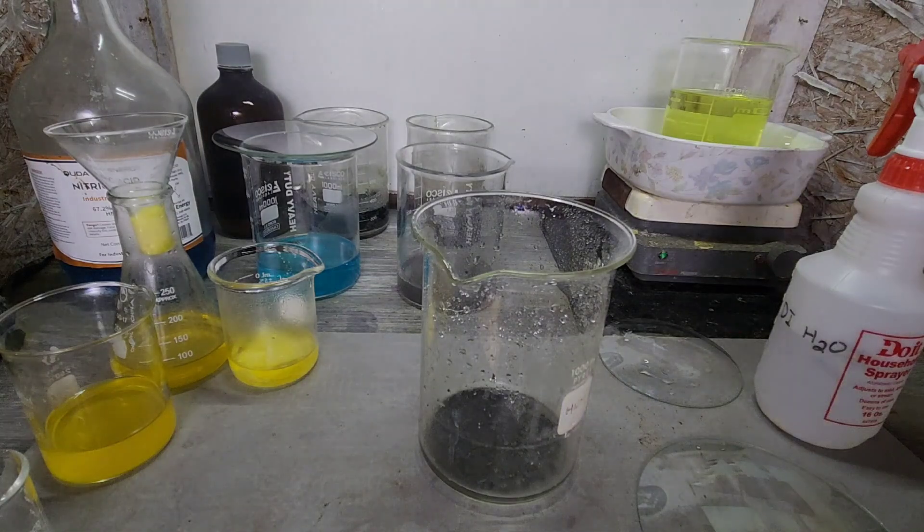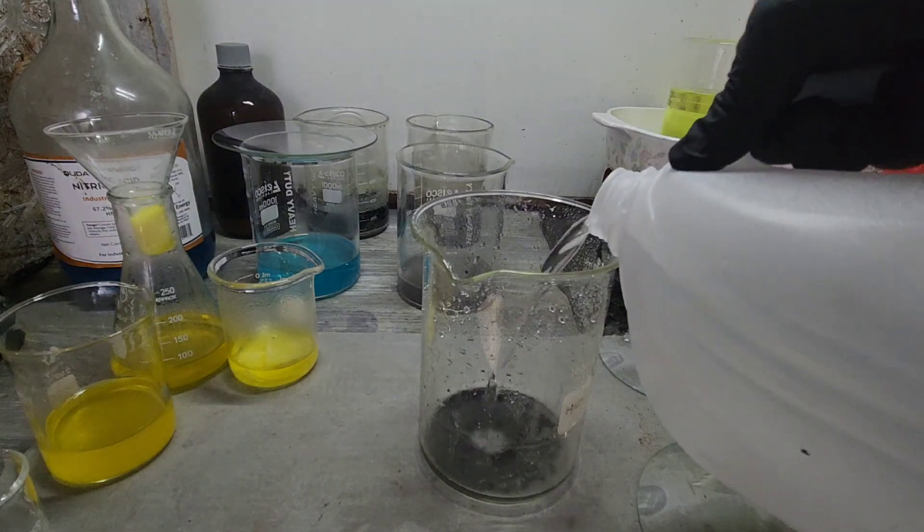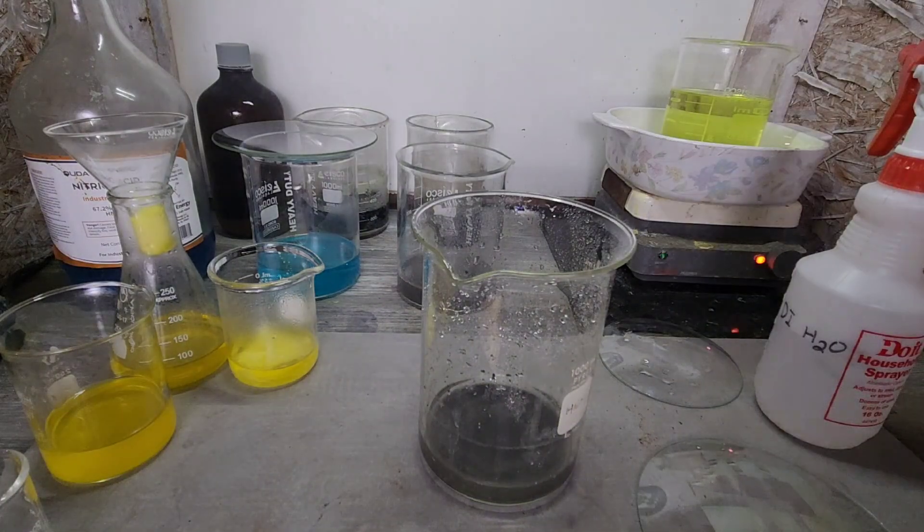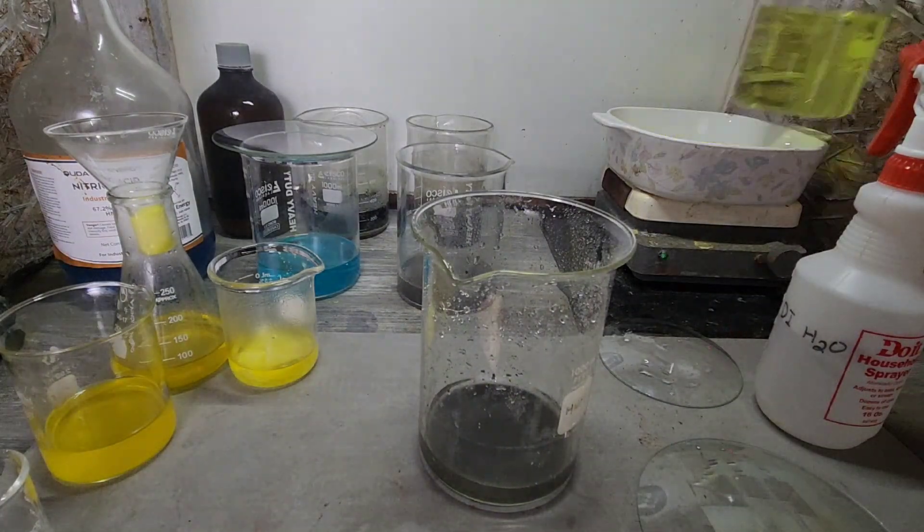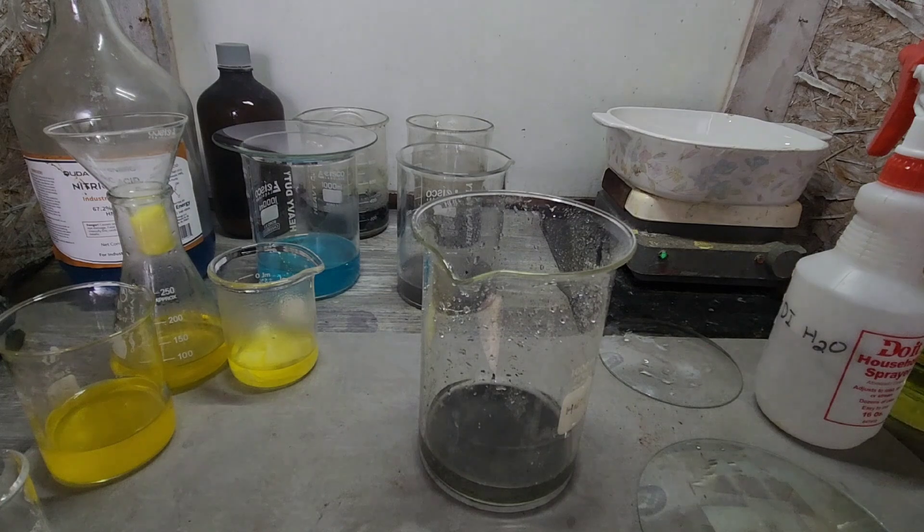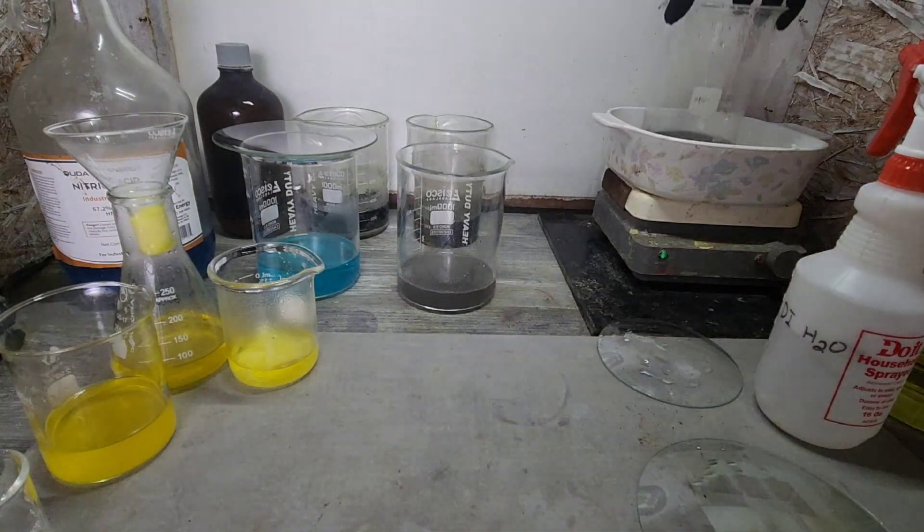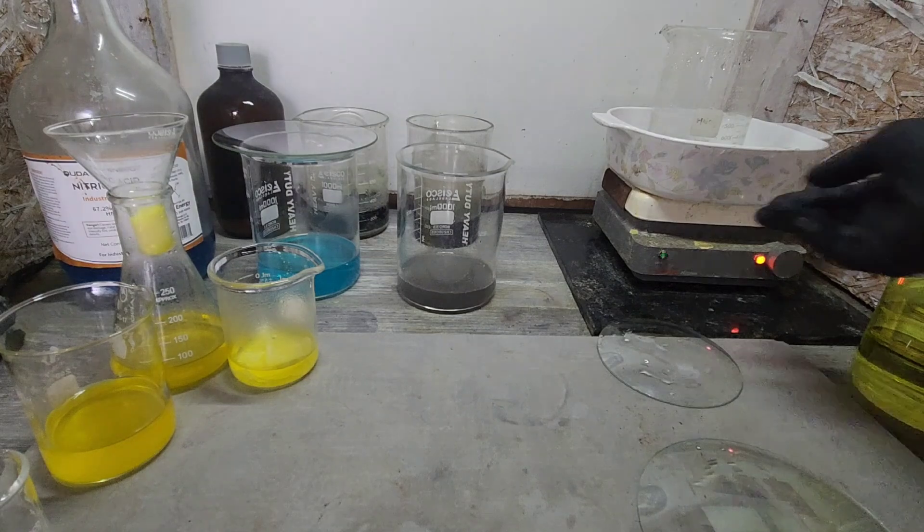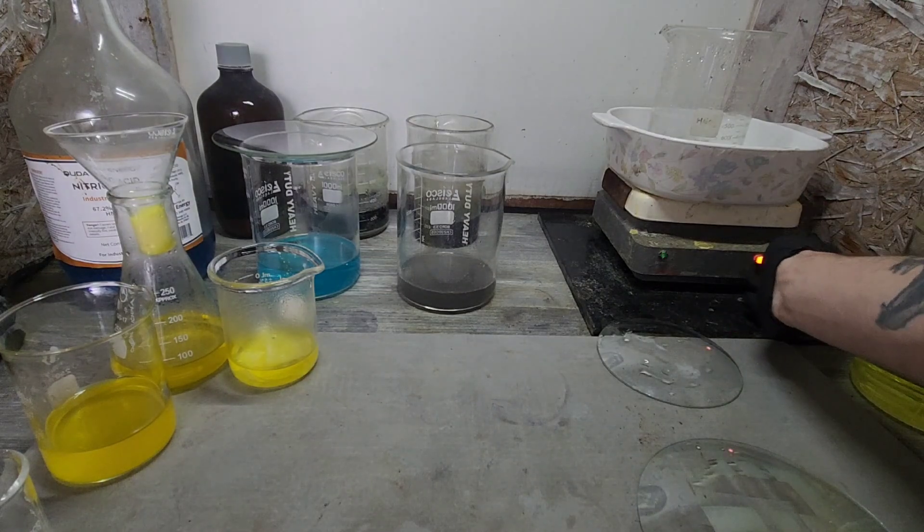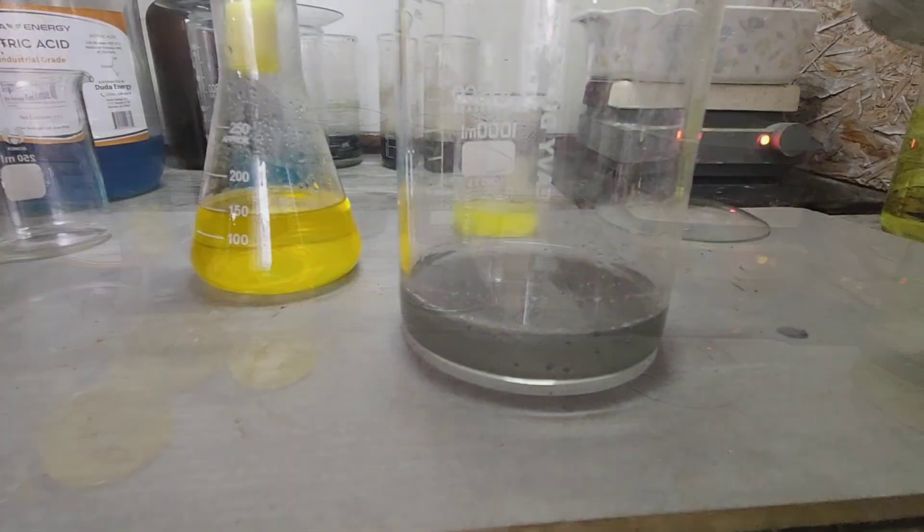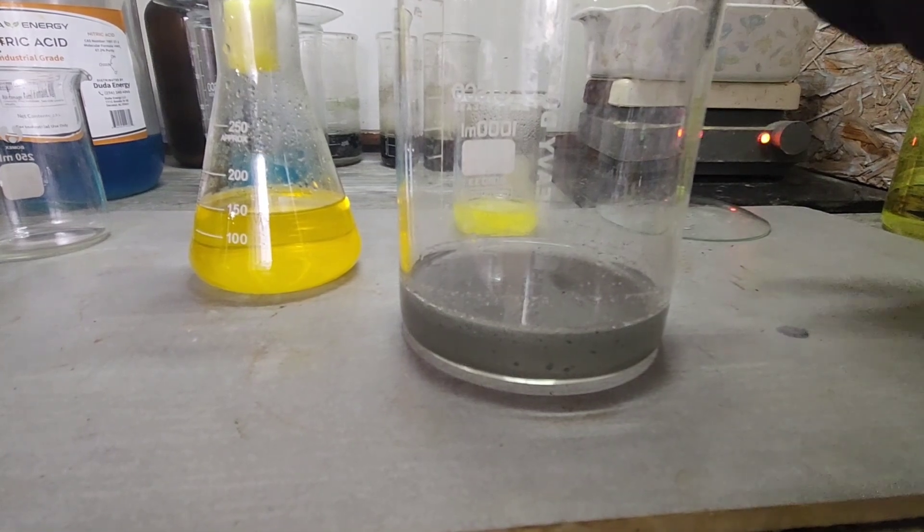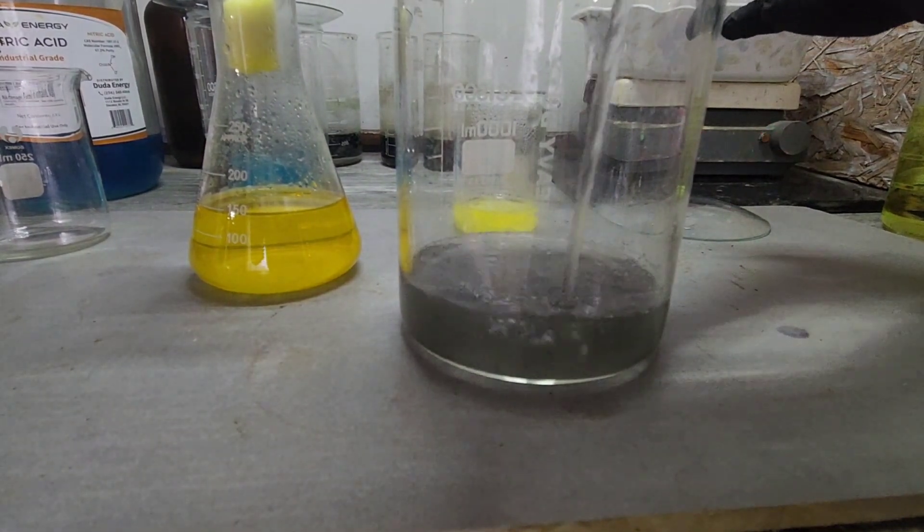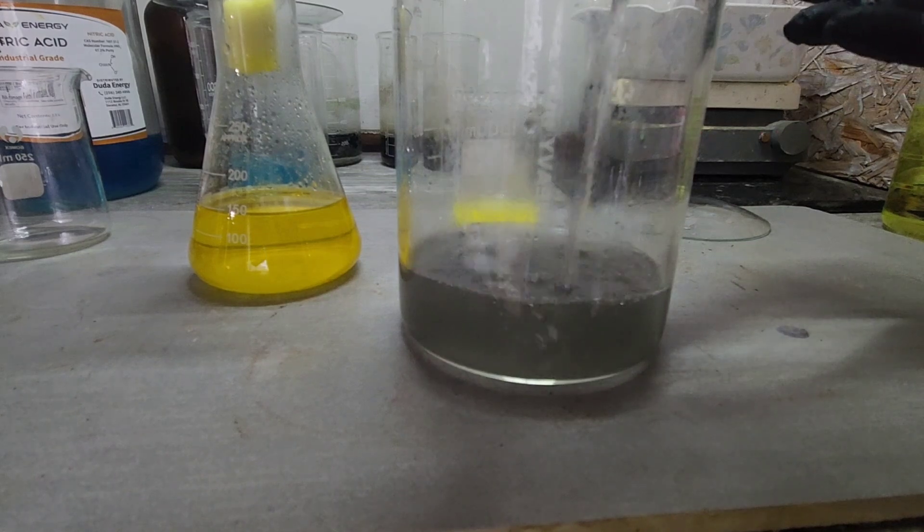Let's grab a little bit of distilled water, just a little bit, and let's boil this. Let's drain the rest of this off and take a look at our metallic silver. There it is.